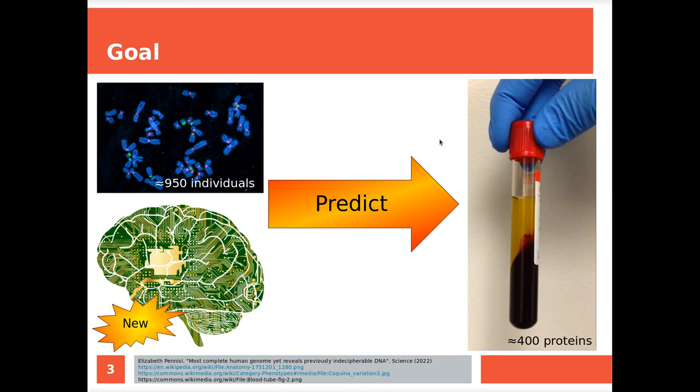But regardless, we like to know more about our genome, our genotype, and one of the things we like to do with it is to make predictions. That is exactly what my research is about, where we use the whole genome sequences of approximately 950 individuals from a health study, the Northern Swedish Population Health Study.